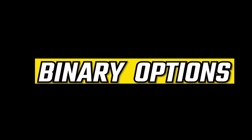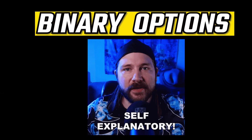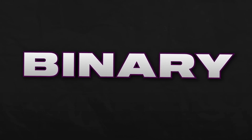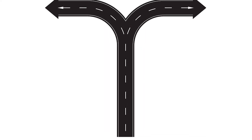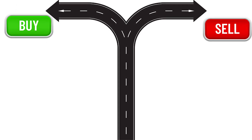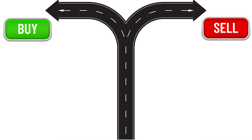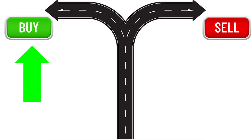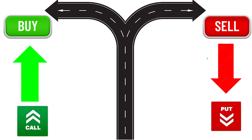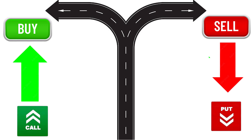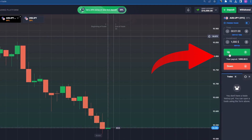The word binary options is self-explanatory. The word binary itself means two, where you have two options. One is where you have the option to buy or to sell. Sometimes it will be by the name of buy or sell, up or down, and call or put. This is its basic meaning — you are given only two options.